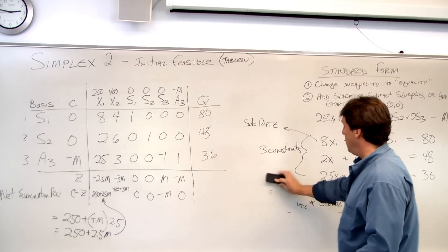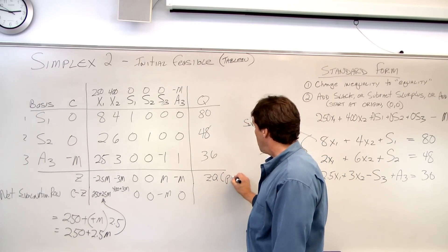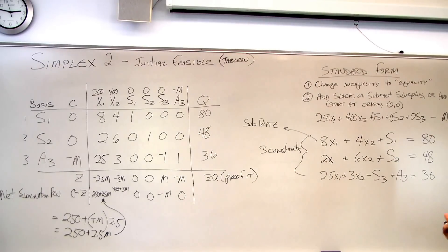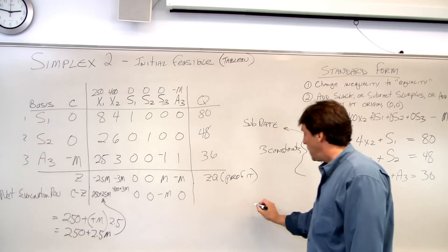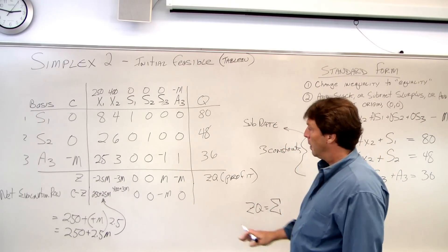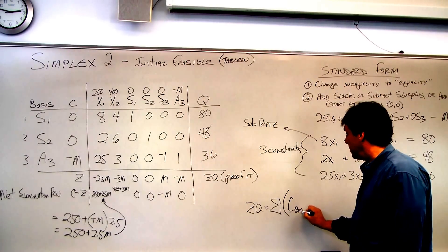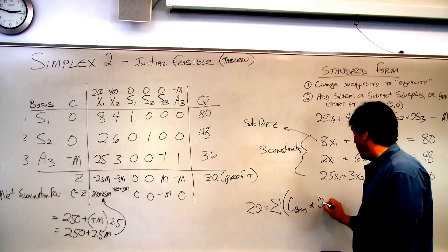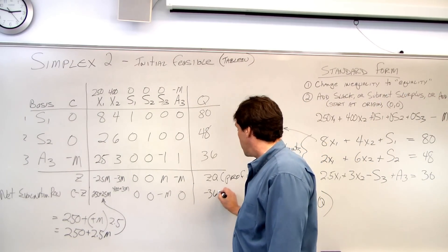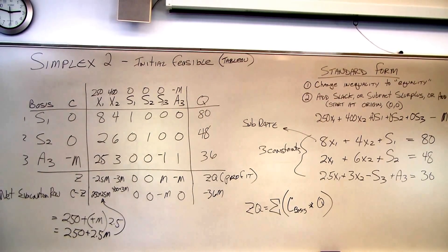The final thing we want to calculate is what's called our Z sub Q, or our profit. We know we're starting at the origin, so our profit is going to be 0. We would calculate it as the summation of our C in the basis times Q. Our profit here would be negative 36M. Of course, we're not making any money at the origin.